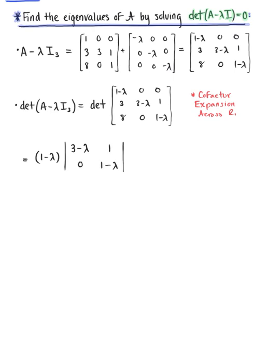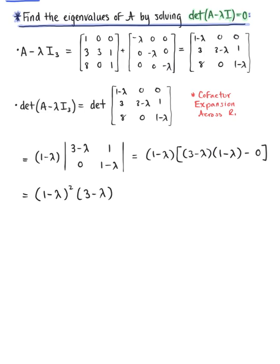Computing this 2 by 2 determinant, we are left with 1 minus lambda multiplied by 3 minus lambda times 1 minus lambda minus 0. Simplifying this, we are left with the characteristic polynomial: 1 minus lambda squared times 3 minus lambda.